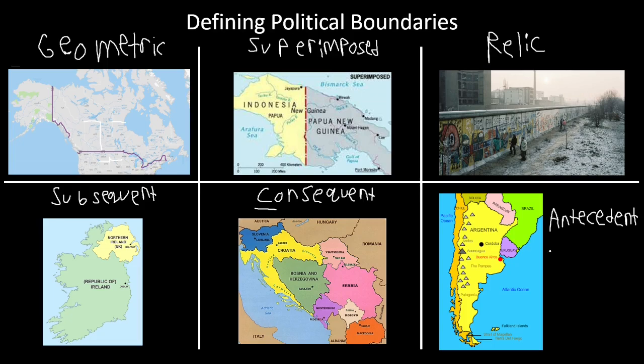Those are our six different boundaries: geometric — straight lines; superimposed — outside forces; relic — still there but no function; subsequent — change with the evolution of the cultural landscape; consequent — cultural differences; and antecedent — physical differences.